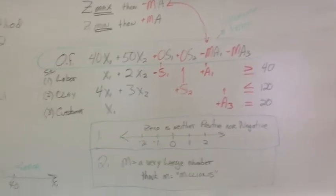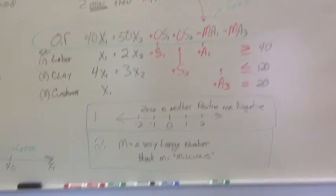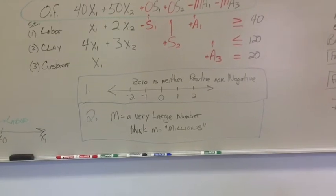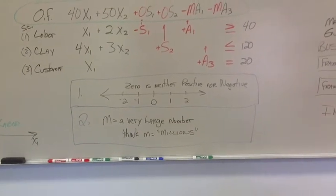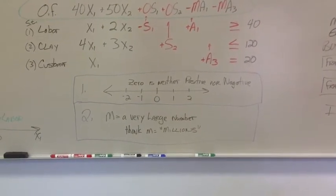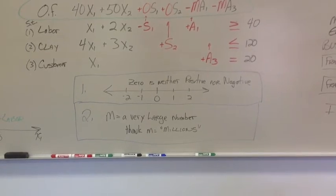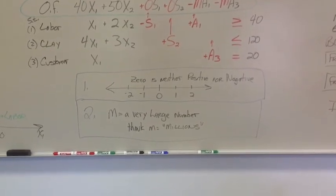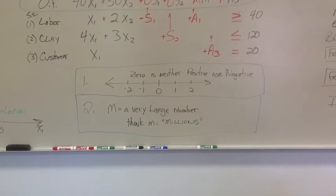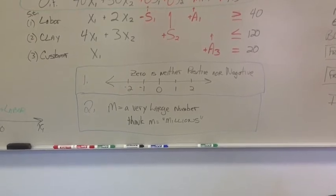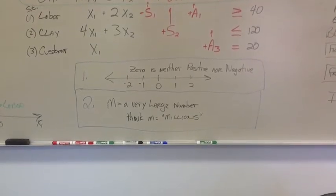All right, so what is M? Well, think of M as a very large number, an order of magnitude. If you remember, A stands for an artificial variable. It's not real. So whenever it's in our basis, we use M to mean a very large number.